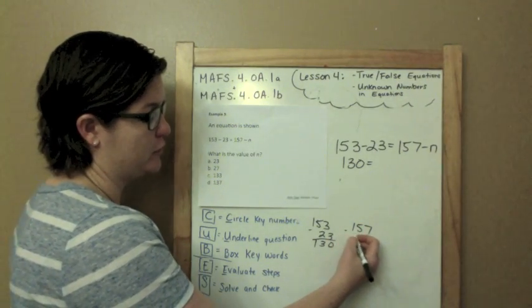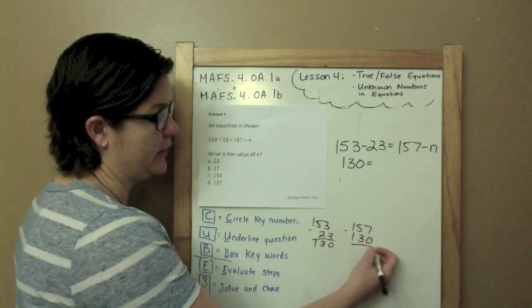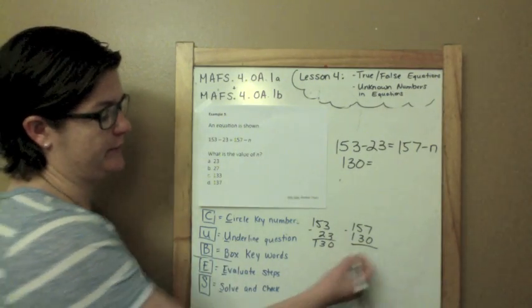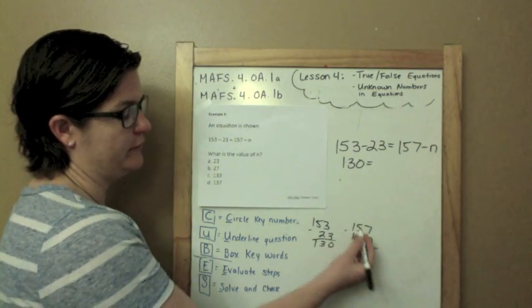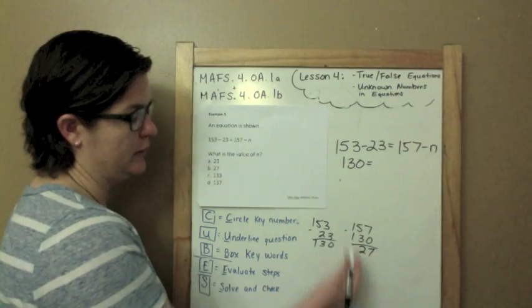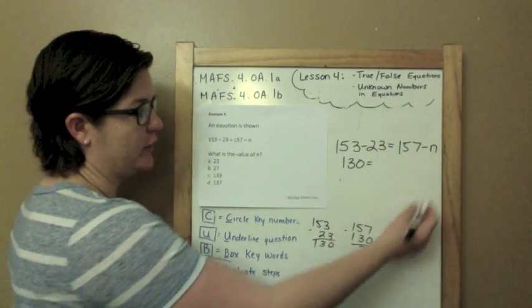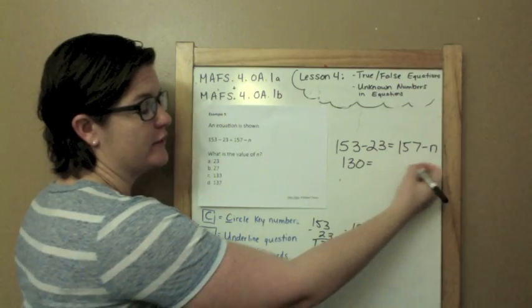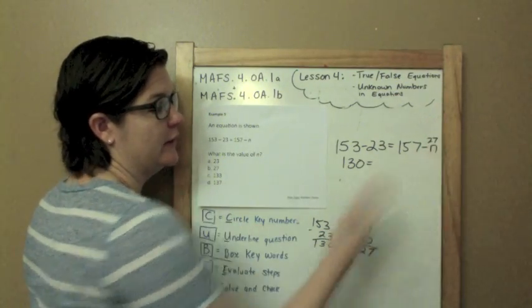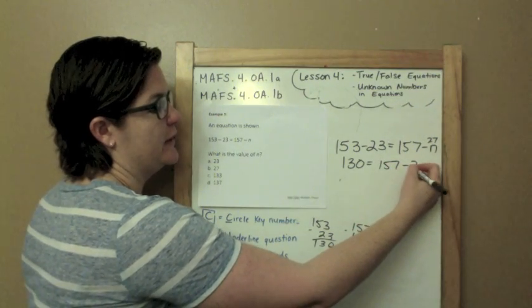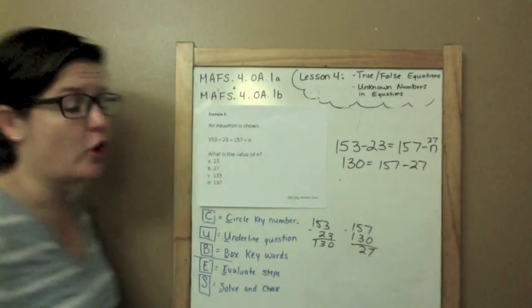So 157 minus n will give me 130. So if I subtract 130 from 157, that will tell me what n is. 7, 5 minus 3 is 2, 1 minus 1 is 0. So the value of the n is 27, because 157 minus 27 will give me 130.